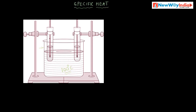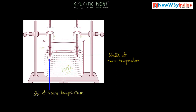Now consider two identical test tubes with single-holed rubber corks. These two test tubes are filled with the same mass of substances. One test tube is filled with water at room temperature, and the other is filled with oil at room temperature. Insert two thermometers into these two test tubes. The temperature of both substances starts at the same room temperature.